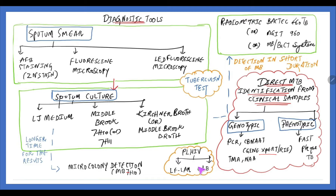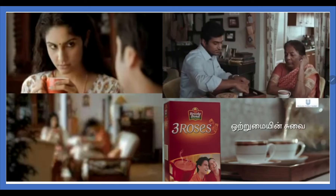C-TB is a novel specific skin test based on ESAT-6 antigen and CFP-10 antigen. At last, there is the skin test which is most commonly the tuberculin test. This picture is shown to remember the culture media for tuberculosis.